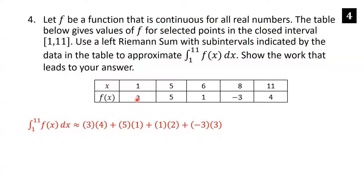For [1,5]: f(1) is 3, times the length 5 minus 1 equals 4, giving 12. For [5,6]: f(5) is 5, times length 6 minus 5 equals 1, giving 5. For [6,8]: f(6) is 1, times length 8 minus 6 equals 2, giving 2. For [8,11]: f(8) is negative 3, times length 11 minus 8 equals 3, giving negative 9. Total: 12 plus 5 plus 2 minus 9 equals 10.